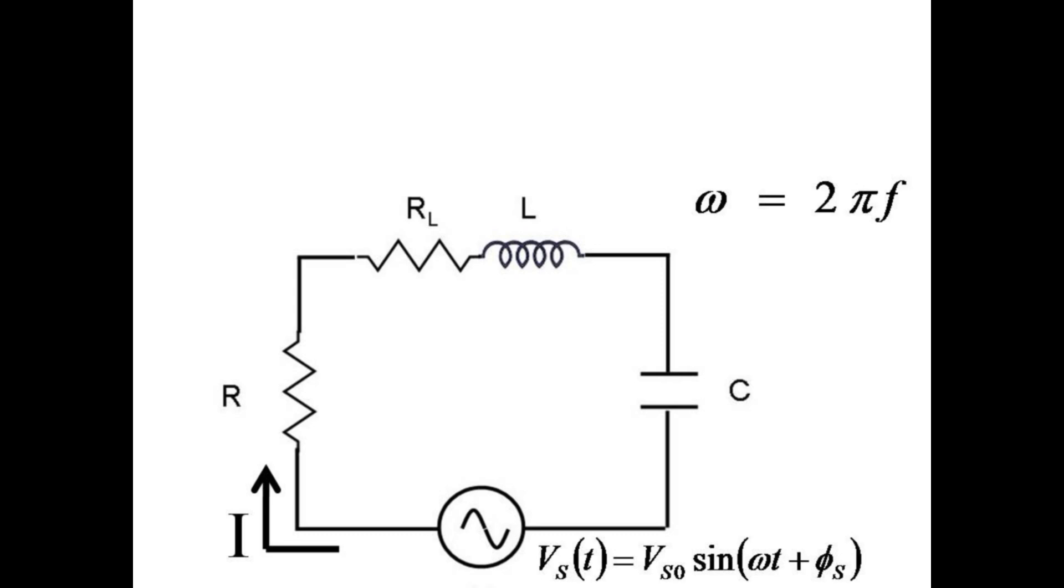In fact, all phases in this lab are given relative to the current in the circuit, which is the same everywhere since the elements are in series. The voltage across the resistor is its amplitude times the sine of ωt, and it is precisely in phase with the current at all times. This is just Ohm's law.